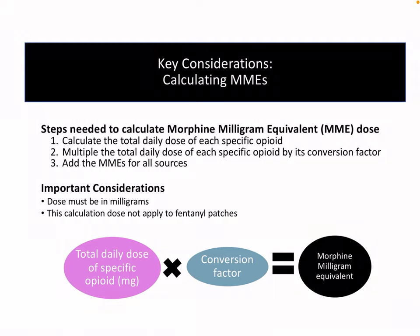Now let's talk about how to calculate morphine milliequivalents. Morphine milliequivalents are used for many different reasons, including trying to give an overview of how much opioids the patients are using by using one common term. They're also used in clinical studies and in laws and regulations, so it is important to know how to calculate them.